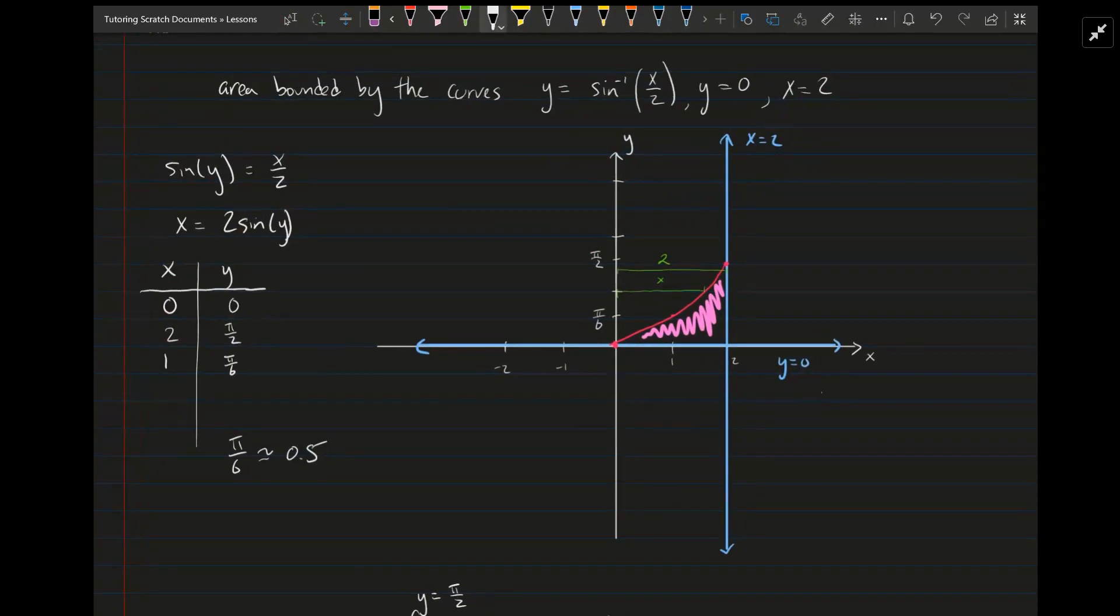The way that I would graph that is to take the sine of both sides. So you have sine of y is equal to x over 2. As you can see here, I've already done it. And then you can rewrite that as x equals 2 sine of y.